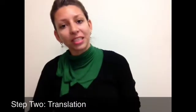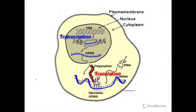Step 2 is translation — going from RNA to protein. This happens outside the nucleus, and it makes proteins at the ribosomes using mRNA as a template and tRNAs that carry amino acids.